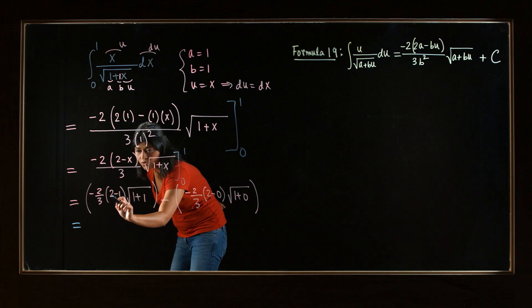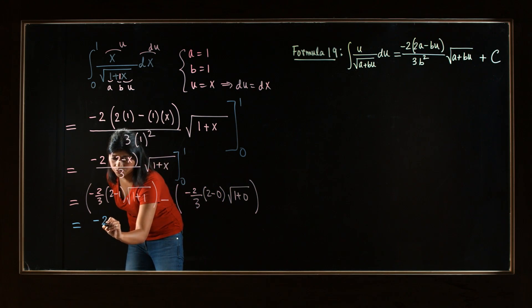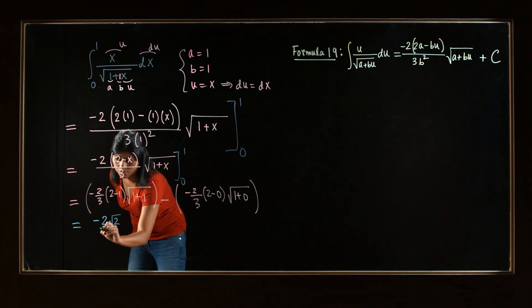Here, we have 2 minus 1 is 1, and here, you have square root of 2. So negative 2 square root of 2 over 3.